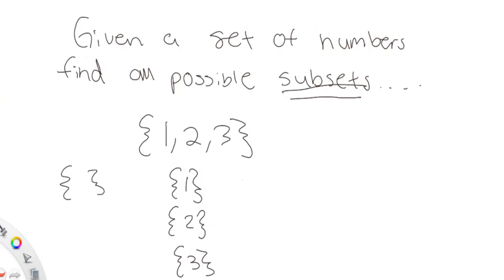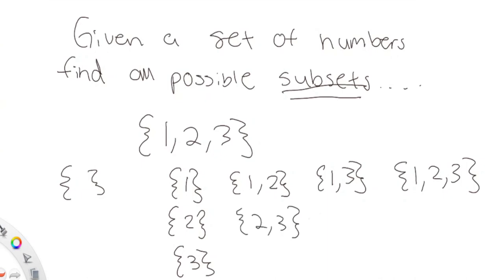What other subsets are possible? I could pick one and two, I could pick one and three, I could pick two and three. And I could pick all three values: one, two, and three. That's all of them — we can't pick something like {3, 3} because there's only one three in the set.